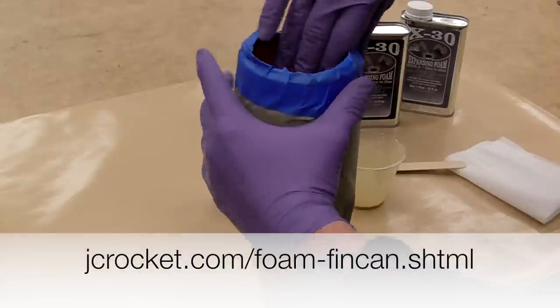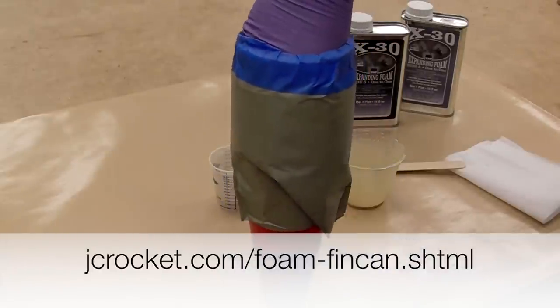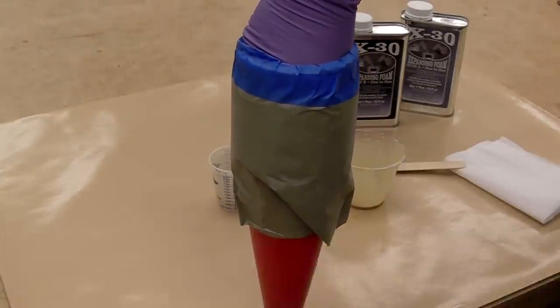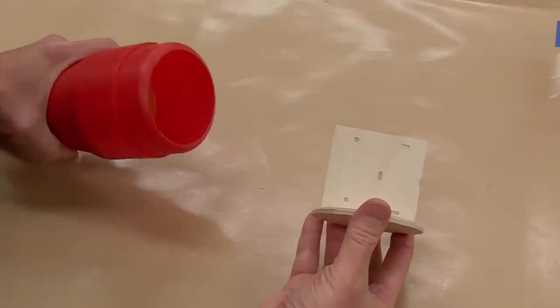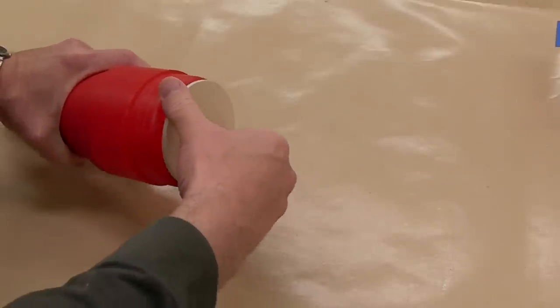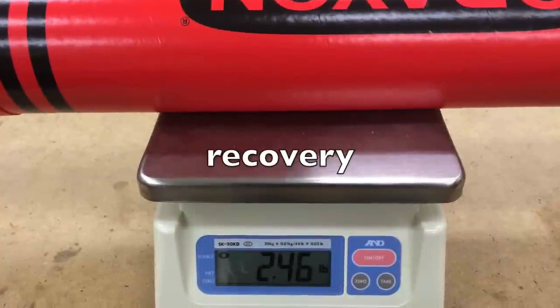Two-part expanding foam is a bit tricky to work with. You may want to check out my other instructional video for more tips. And then once the expanding foam has cured, a fillet of epoxy around the rim. Of course epoxy doesn't stick all that well to plastic but scuffing up the inside with sandpaper hopefully will give enough of a bond to keep it together.